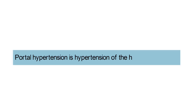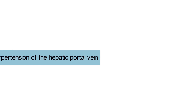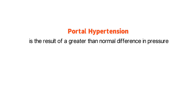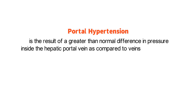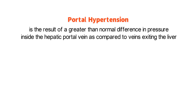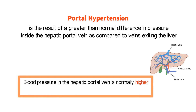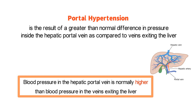Portal hypertension is hypertension of the hepatic portal vein. It is the result of a greater than normal difference in pressure inside the hepatic portal vein as compared to veins exiting the liver. Blood pressure in the hepatic portal vein is normally higher than in the veins exiting the liver, but in portal hypertension, this difference in blood pressure is even higher than normal and can become pathologic.